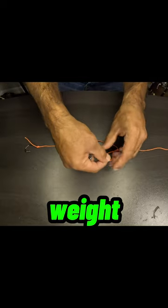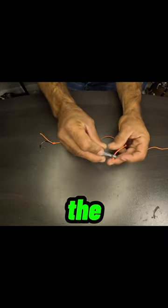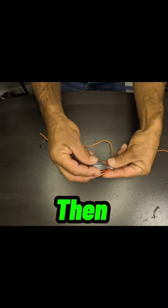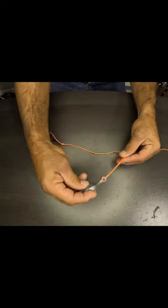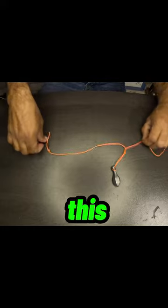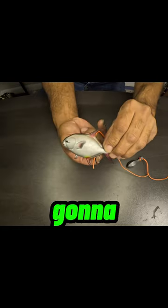Now take your weight—I like using these bank sinkers—and thread the loop through the eye of the weight. Then take the weight back through the loop. It should look like this.